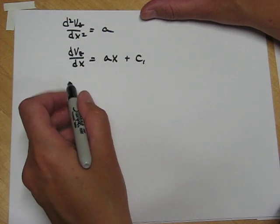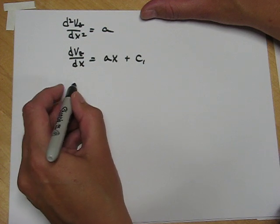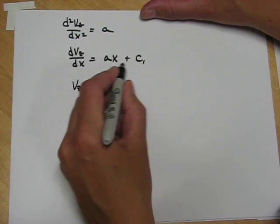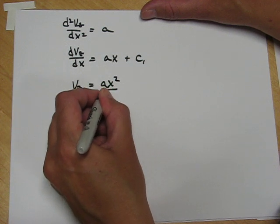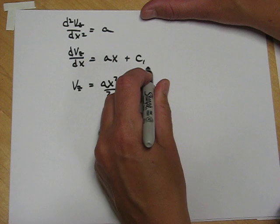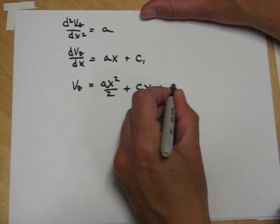Now we'll integrate again. When we integrate dv dx, we just get the function v. And now we integrate the right hand side. The integral of ax is ax squared over two. The integral of a constant is the constant times the variable. And we always add the integration constant.